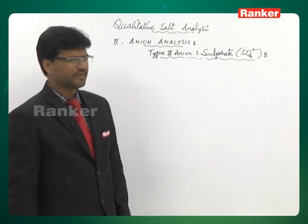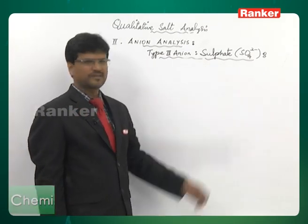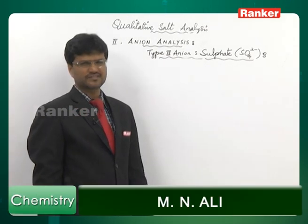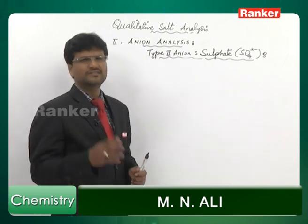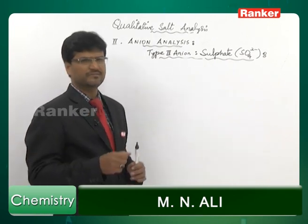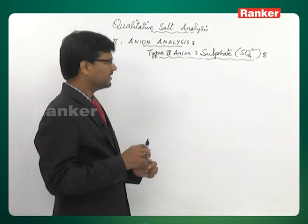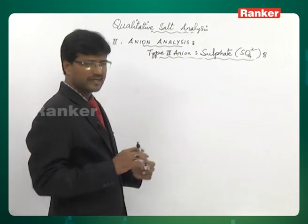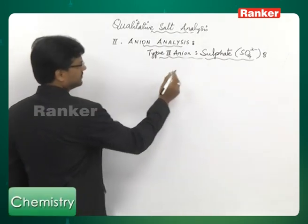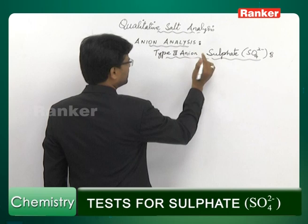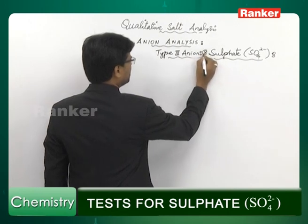Now, testing of Type 3 anion — the only example we have to discuss here is sulphate, SO₄²⁻. This can be tested by some precipitation reactions. Let us look at reactions of sulphate. This gets number 8 in our list.